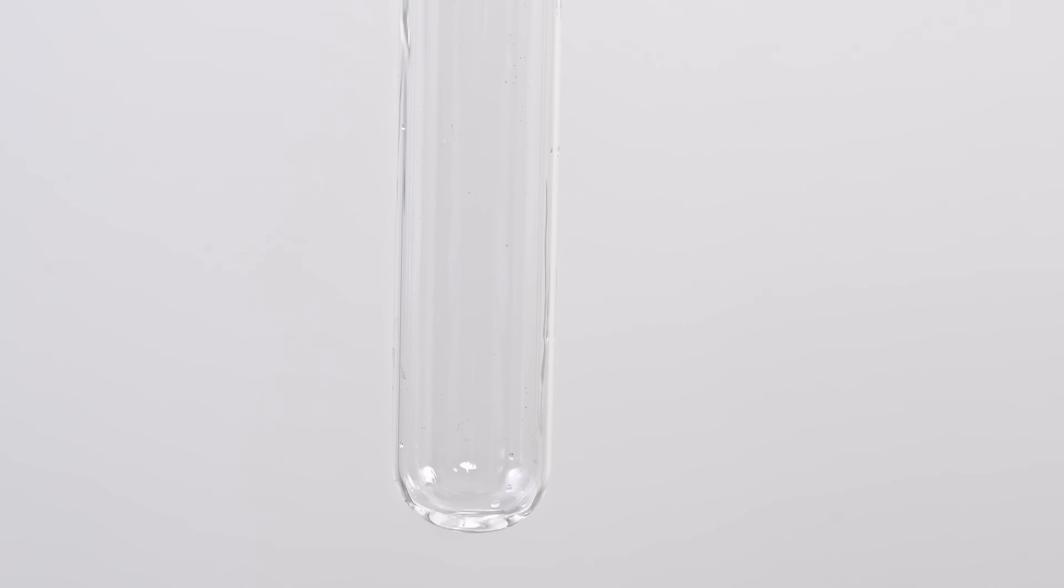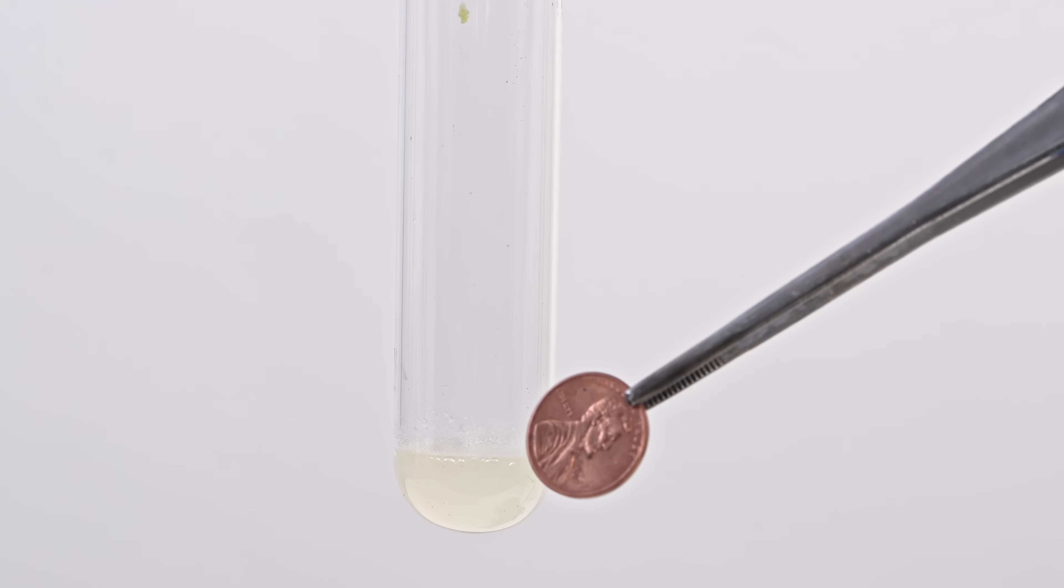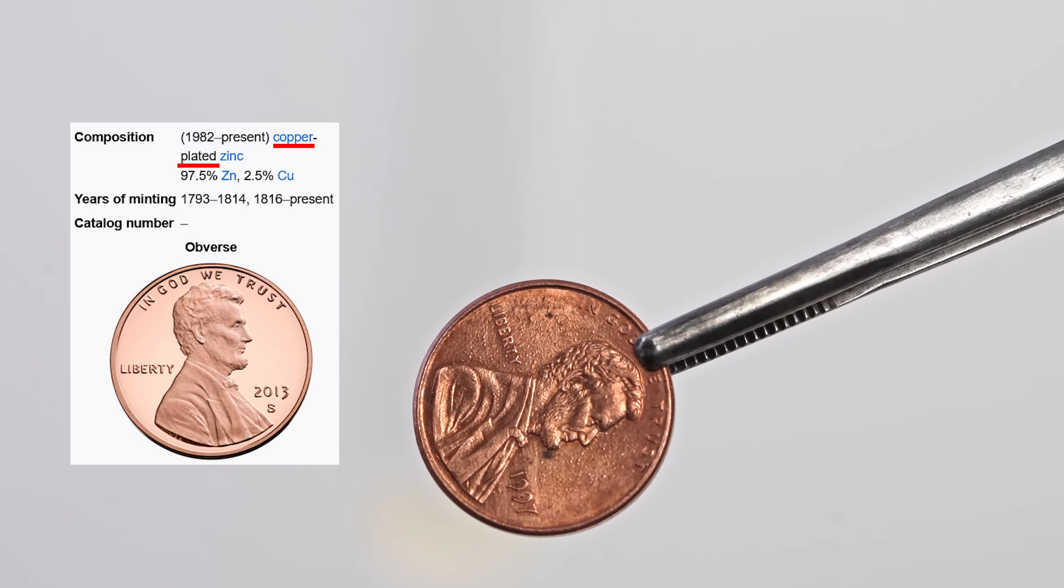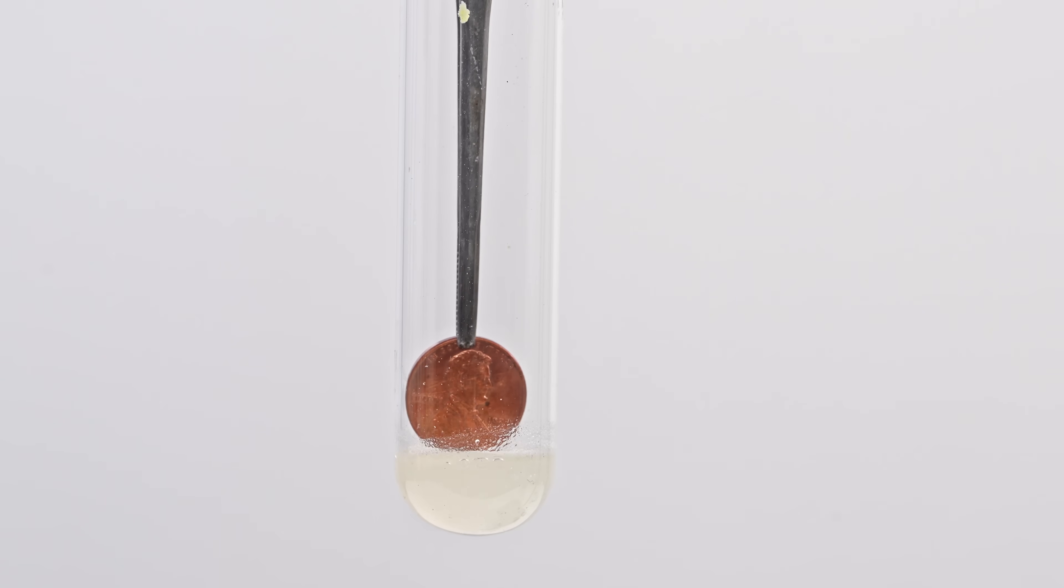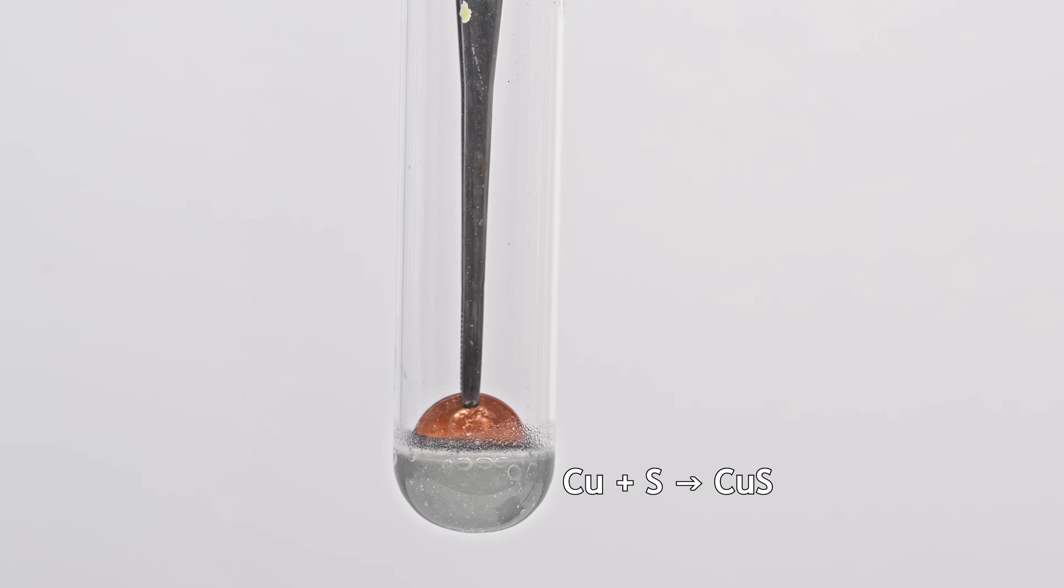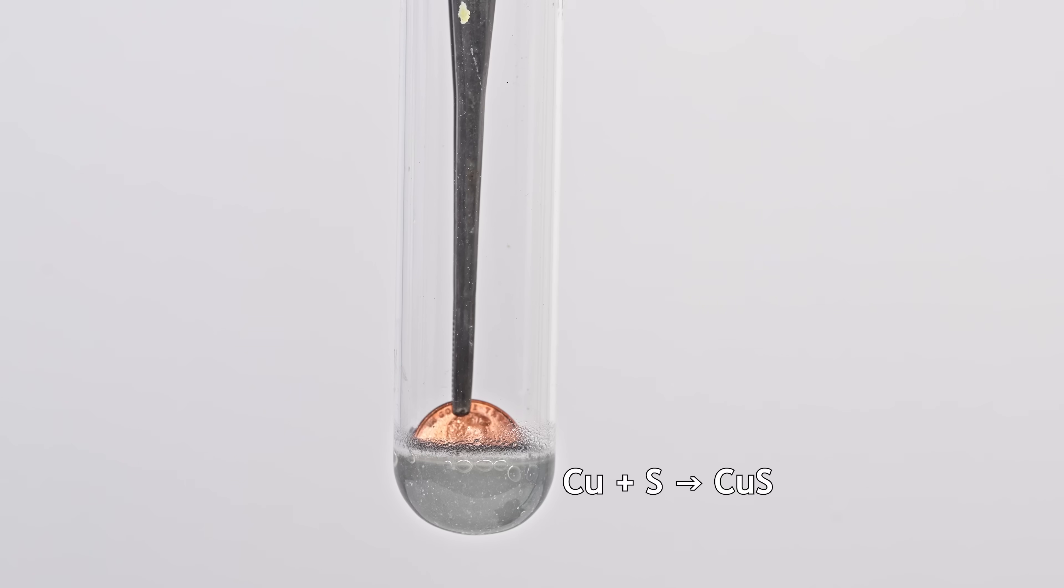The experiment with copper coin is based on this property of copper sulfide dissolution in the presence of cyanide ions. To obtain copper sulfide on the surface of the coin, I prepared a solution of sulfur and carbon disulfide. Sulfur dissolves very well in it. Then I took a copper coin, or rather this coin consists of zinc, simply coated with copper, and dipped the coin in a solution of sulfur and carbon disulfide. In this solution, copper quickly turns black due to the formation of black copper sulfide on its surface.